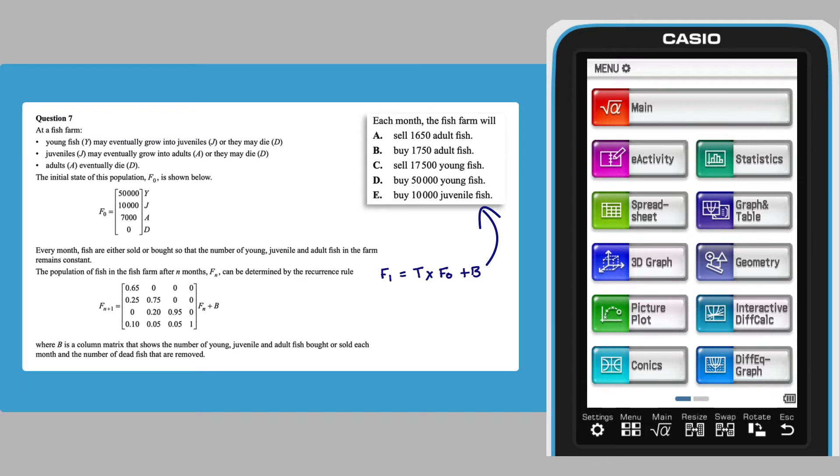The key to this question is to note that B is chosen so that the number of types of fish does not change from month to month. This means that F0 equals F1. As such, matrix B can be found by calculating F0 minus T times F0.